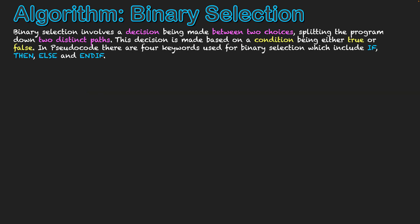Binary selection example. Binary selection involves a decision being made between two choices, splitting the program down two distinct paths. The decision is made based on a condition being either true or false.